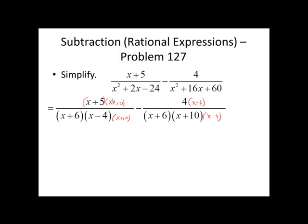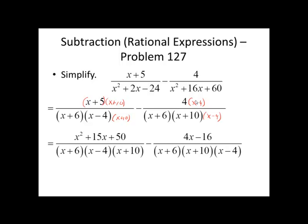We'll multiply out this numerator. We'll distribute the 4 in the second numerator. x plus 5 times x plus 10 is x squared plus 15x plus 50. Distribute the 4 and we get 4x minus 16.